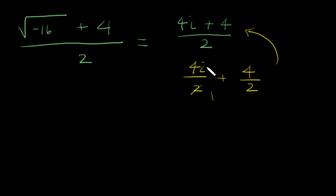So they're both divisible by 2. So that's 2i. This is also divisible by 2, so that's plus 2. If I rewrite it in a plus bi form, that's 2 plus 2i.